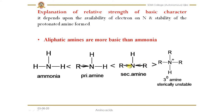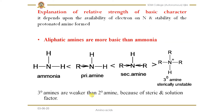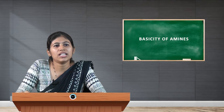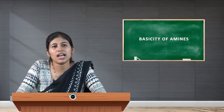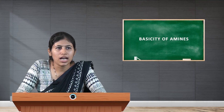In secondary amines, there are two electron-releasing groups, so the availability of lone pair electrons is even greater than in primary amines. However, for tertiary amines, the protonated form that forms after accepting the proton is not stable due to steric hindrance and solvation factors. Therefore, tertiary amines are considered slightly less basic than secondary amines, even though they have three electron-releasing groups.